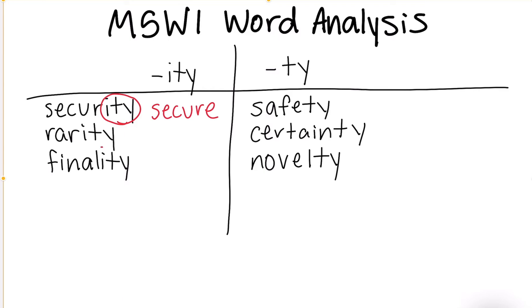What about the word rarity? We added the suffix I-T-Y — what do we think the base word is? The base word was rare. We dropped the E and added I-T-Y.